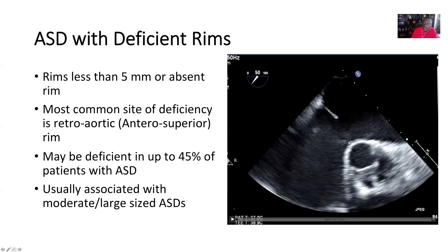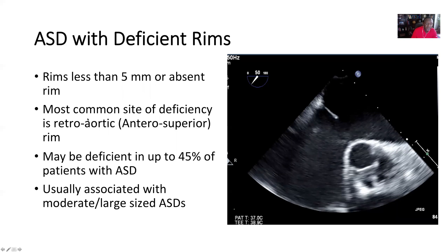There's no piece of tissue around the aorta at all. This can be closed, but the device is going to have to split around the aorta and it can lead to complications down the road, as described later. The most common site of deficiency is retro-aortic, which is the absence of the anterior superior rim of the ASD, and we can see this in about 45% of patients with ASD, so it's fairly common. These are usually moderate to large-sized or large-sized ASDs.